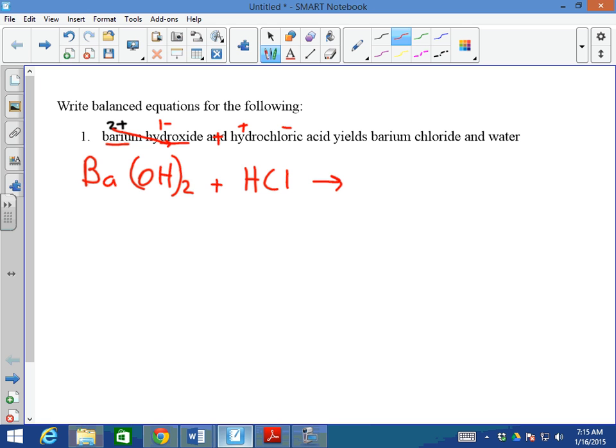Yields means the arrow. Barium chloride. Based on before the arrow, I saw that barium is plus 2 and chlorine is negative 1. Therefore, the 2 goes to chlorine, the 1 goes to barium. Barium chloride, the 2 came to chlorine, and water. We have written the equation.